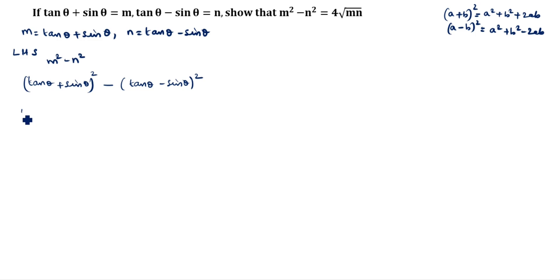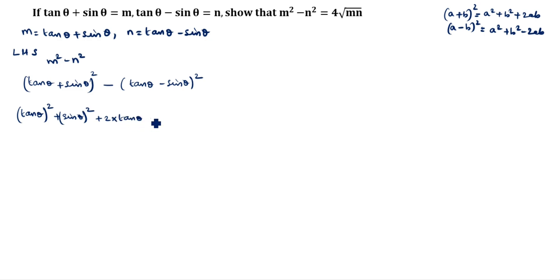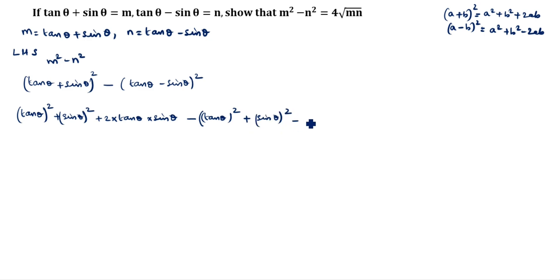Here a = tan θ and b = sin θ. So (tan θ + sin θ)² = tan²θ + sin²θ + 2 tan θ sin θ. And (tan θ - sin θ)² = tan²θ + sin²θ - 2 tan θ sin θ.